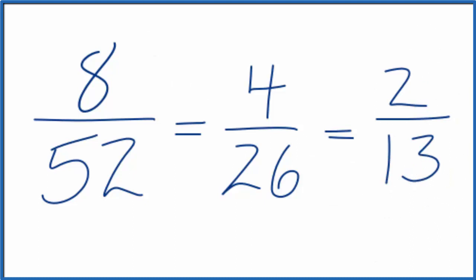So if we simplify 8 over 52, we get 2 thirteenths. 8 over 52 is the same as 2 over 13. Their values are the same. If you divided 8 by 52 or 4 by 26 or 2 by 13,